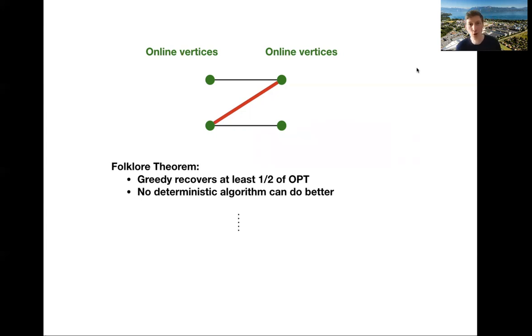However, it was open whether randomization could do better than one half. And we answered that question last year and we proved that there exists a randomized strategy that recovers strictly more than one half of opt. So one half plus a small constant at the moment. So it remains an interesting open work to get a better constant in this range.